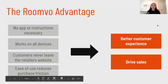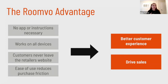Here are some of the great advantages of the RUMVO Assistant. There's absolutely no app or instructions necessary — it displays as a widget on your retailer's website so customers have access right there. It works across all devices, whether it's a mobile phone, tablet, or desktop, and the quality is optimized and consistent across all devices. Customers never leave your retailer's website — the URL stays the same while they're in the visualizer. The visualizer is very intuitive, making it easy to navigate between products and room scenes, leading to a better customer experience and helping sales associates drive more sales.